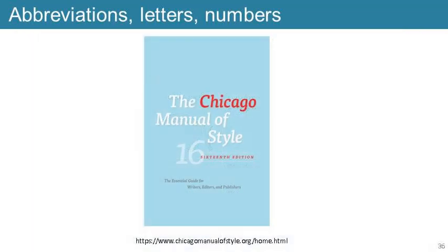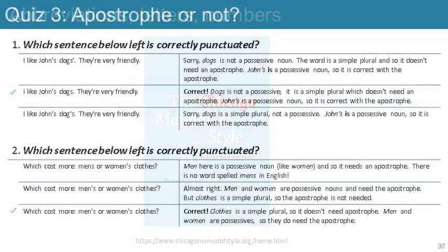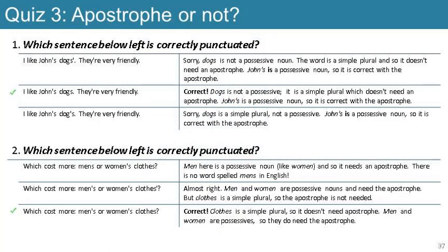In summary of this section about apostrophes in abbreviations, letters, and numbers, if you are unsure whether or not you need an apostrophe, you should consult your organisation's style guide or look in an authoritative style guide such as the Chicago Manual of Style. Quiz page — pause the video if you want to review the questions and answers before continuing.